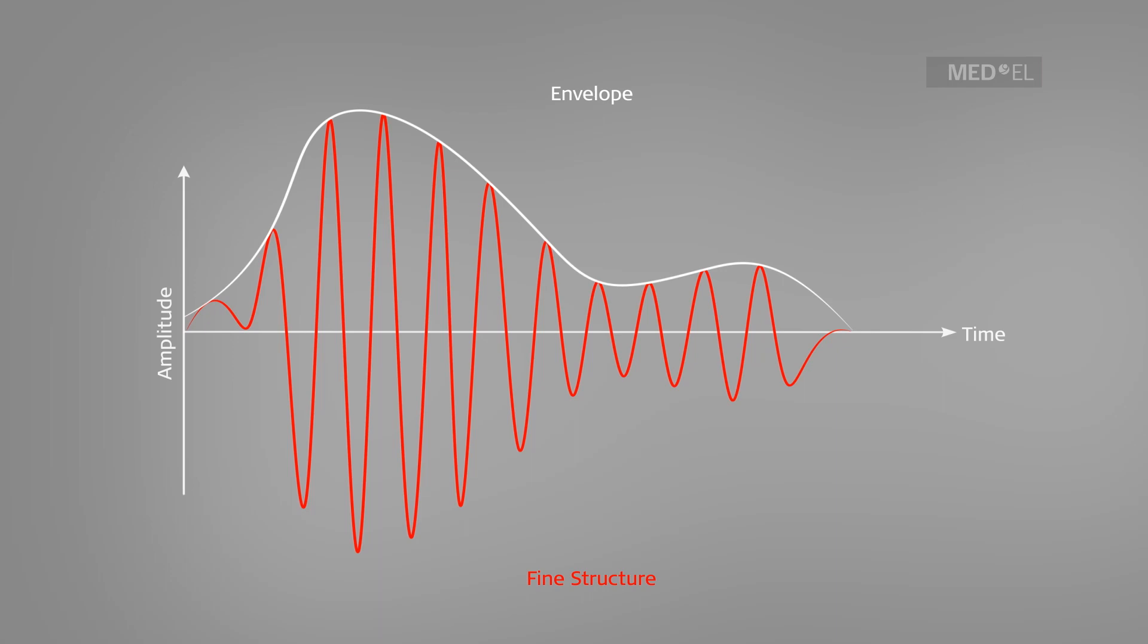With music, the fine structure becomes more prominent than the envelope. The fine structure and the envelope of sounds are both important to the complete comprehension of sound. These example sounds demonstrate how the envelope is more prominent with sounds of speech, and how the fine structure is more prominent in musical sounds.